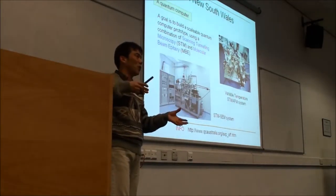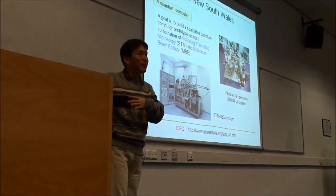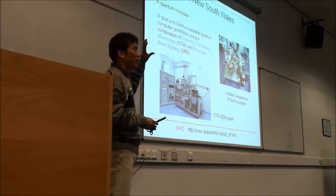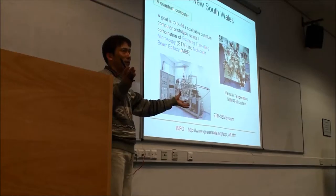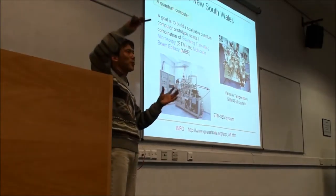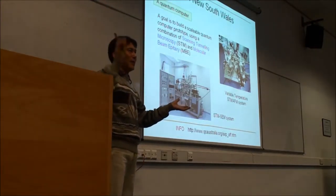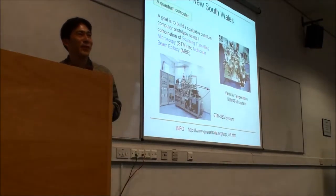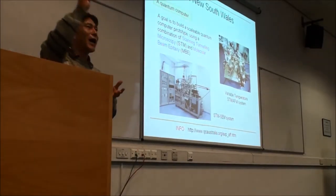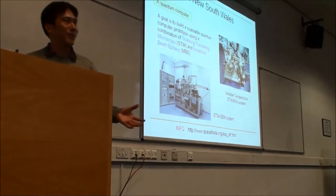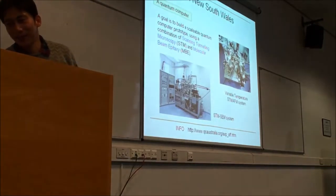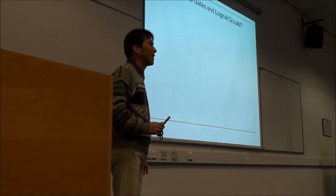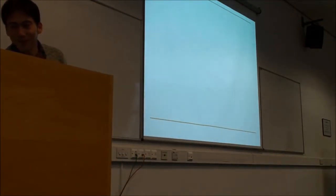People want to expand seven qubits into 100 qubits. If you have n qubits, you can store possibly 2 to the n classical bits. So 100 qubits means 2 to the 100 classical bits to operate.